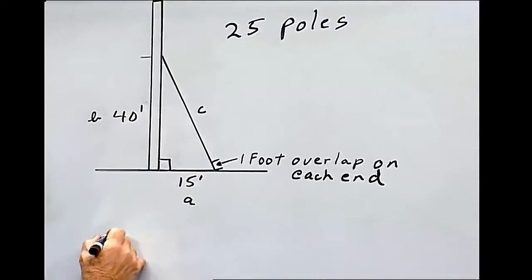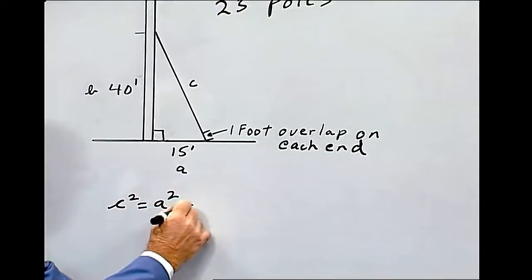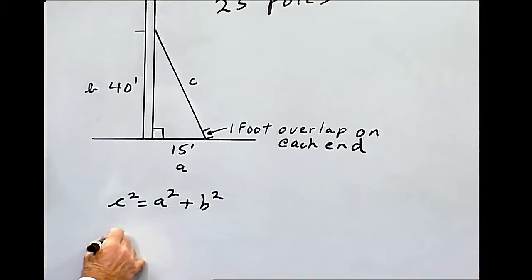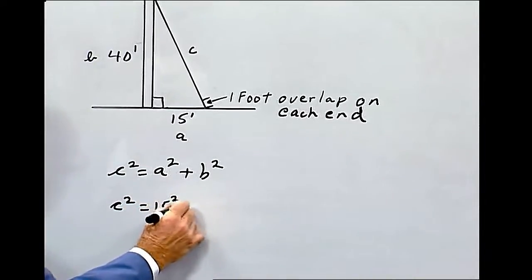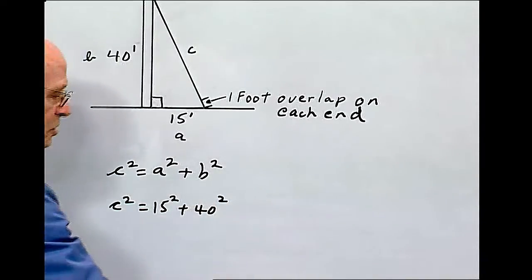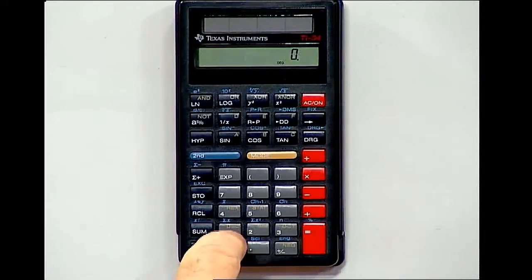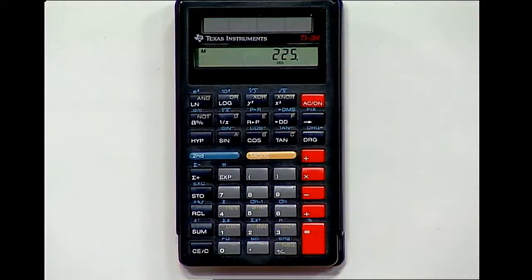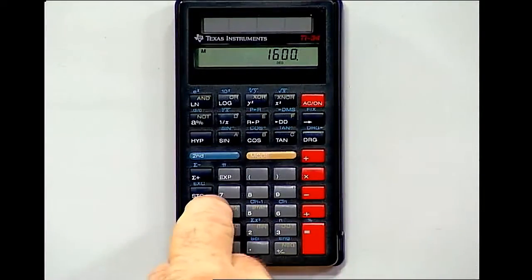And the Pythagorean theorem states that C squared equals A squared plus B squared. So let's just put in the numbers. C squared equals A squared, which is 15 squared, plus B squared, which is 40 squared. Let's just go to the calculator. Again, make sure it's all clear, nothing in memory. And so it's 15 squared sum, plus 40 squared sum. Recall.